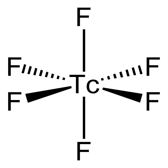Preparation: Technetium hexafluoride is prepared by heating technetium metal with an excess of F2 at 400 degrees Celsius. Tc plus 3 F2 yields TcF6.